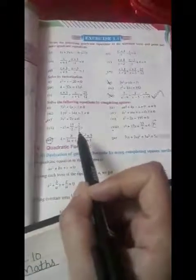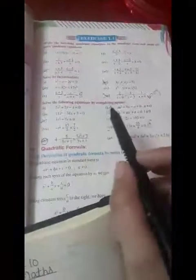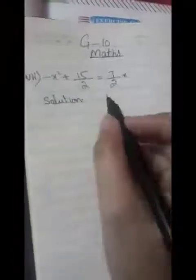Minus x² plus 15/2 equals 7/2x. Solve it by completing the square. I have already told you about the method of completing the square, so let's start. I have written the question and now we will solve it.